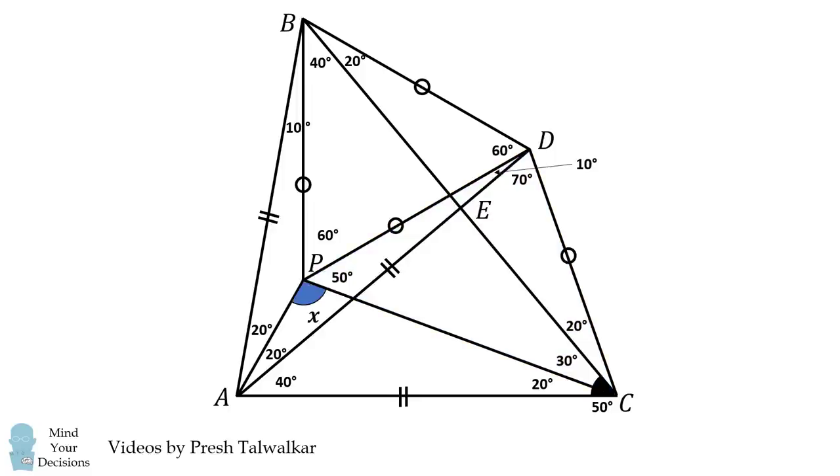We thus look at triangle APC. Two of its angles are equal to 60 degrees and 20 degrees. Therefore, the remaining angle must be equal to 180 minus 60 minus 20, which means x is equal to 100 degrees. And that's our answer.